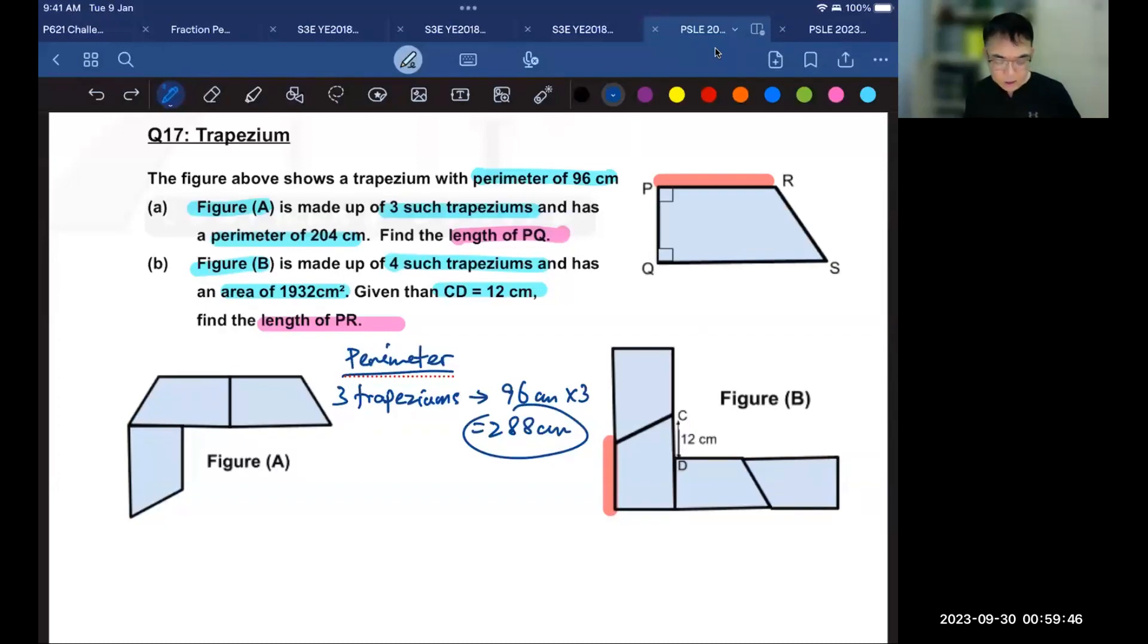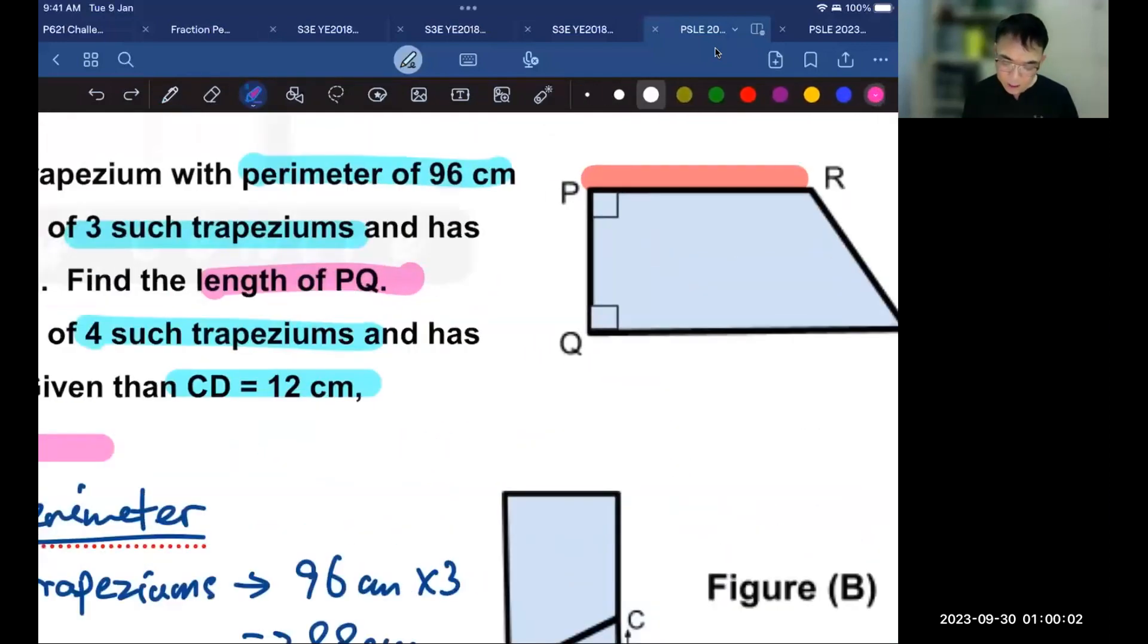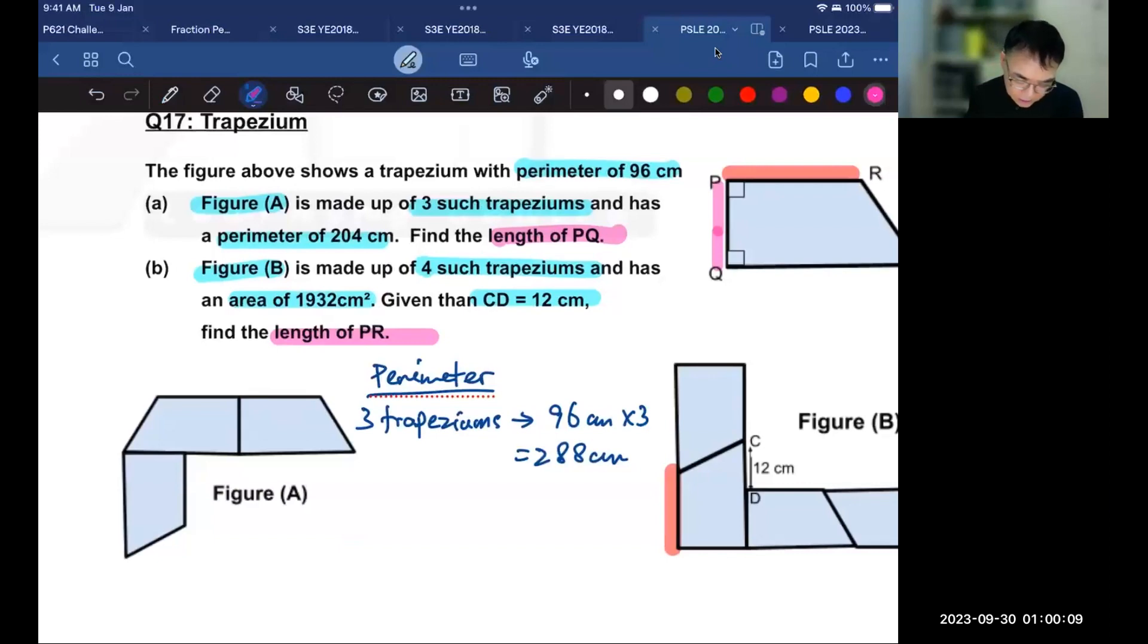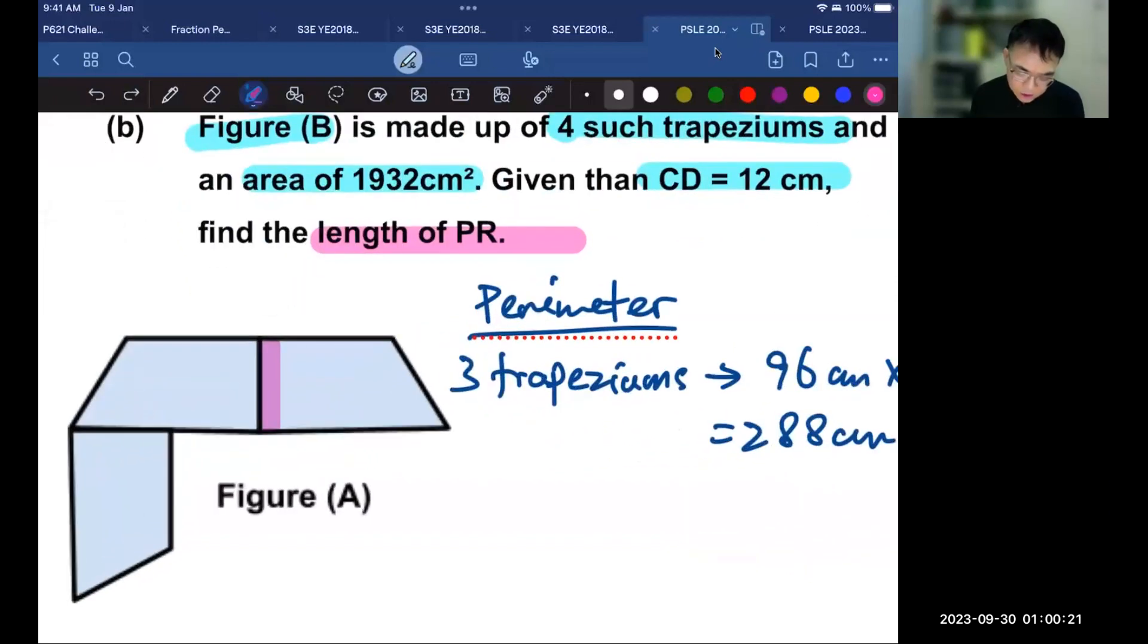What I'm going to do is highlight PQ in pink. So this pink line is inside the figure. And this does not count as part of the 204. But there is more than one line. Because for this trapezium, there is one line. But for this trapezium, there is another line. It's just that they are overlapping. Is that all? The answer is no, of course.